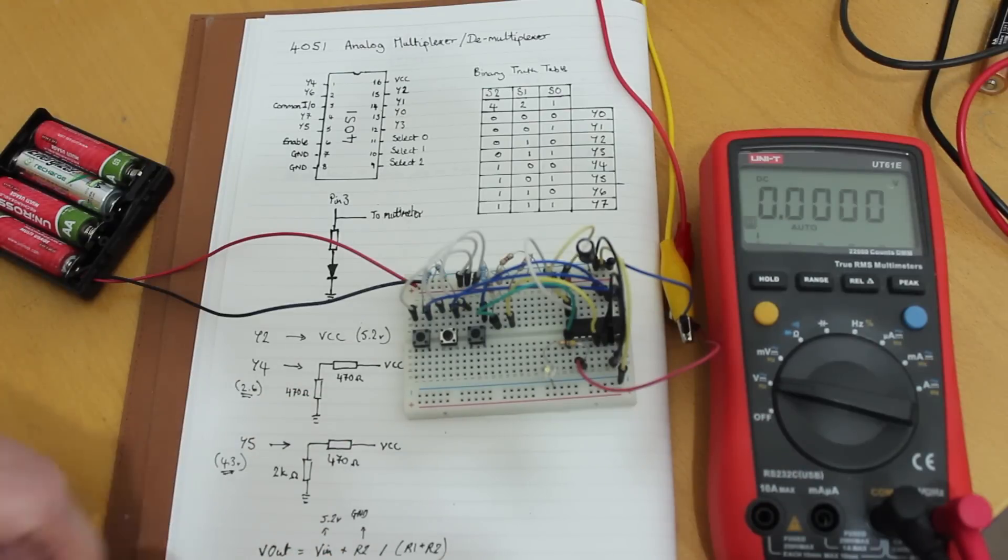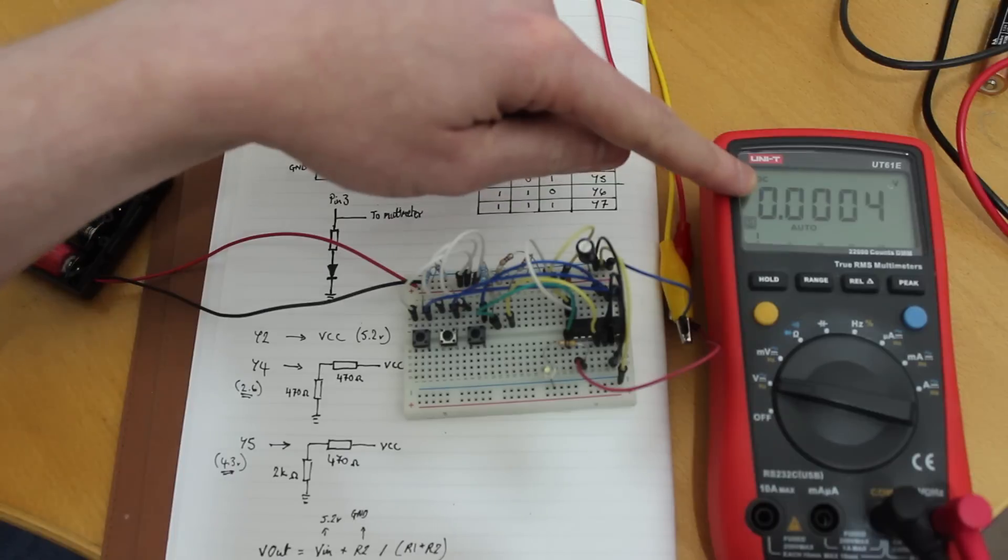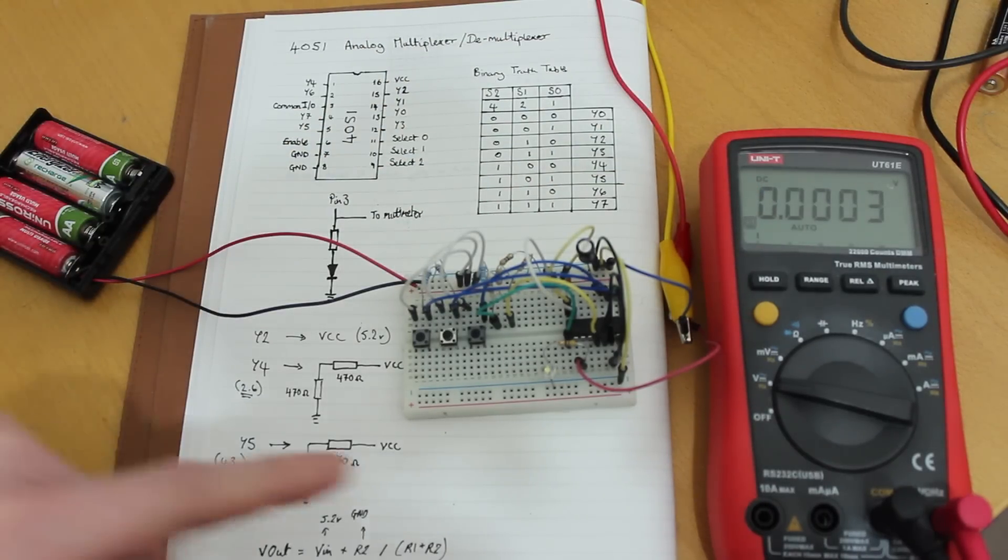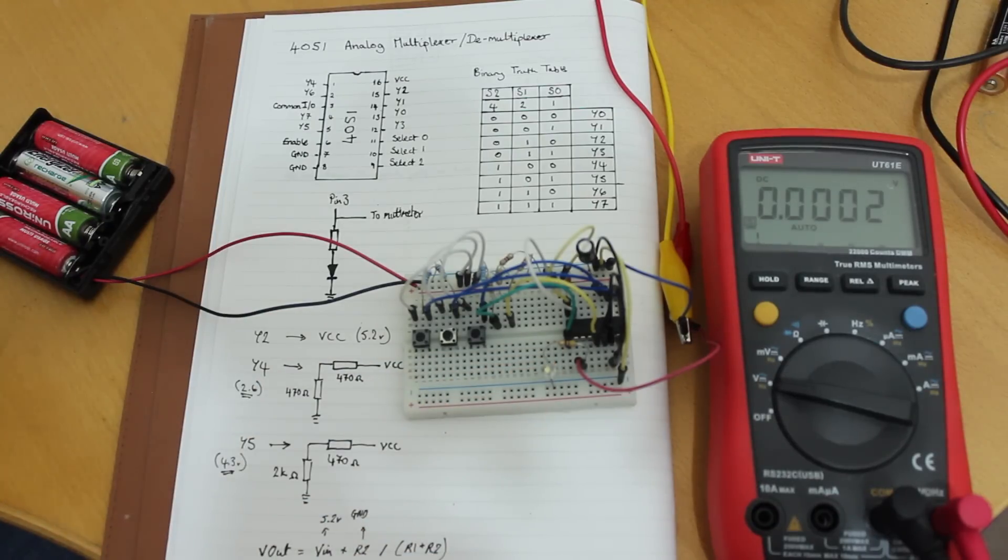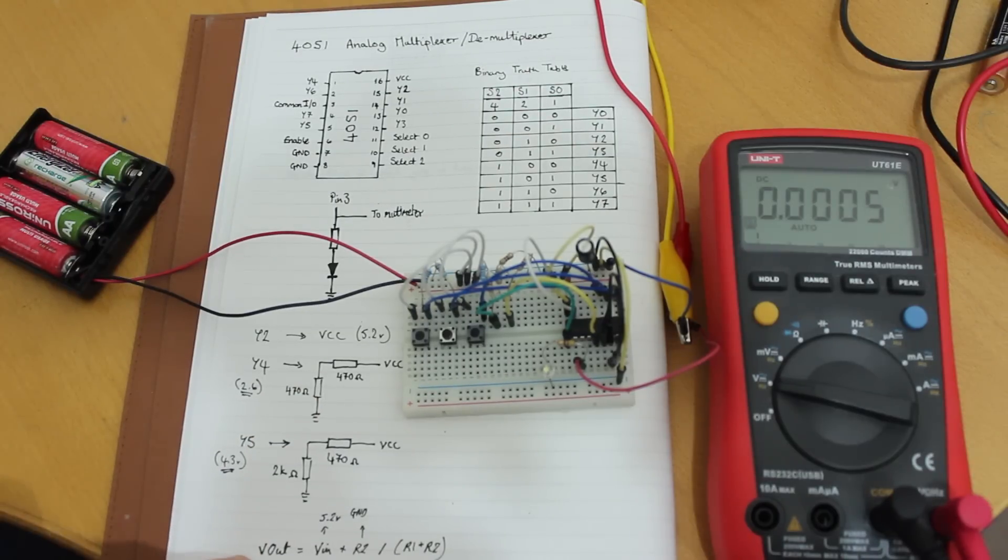So we've got our circuit here. I've put an LED onto the common output so that we can see a visual difference. But I've also hooked it up to a multimeter so that you can see a change in the voltage. Now be aware that the current draw on this LED is going to pull the voltage down slightly from what we might expect using the general calculation for figuring out a voltage divider.